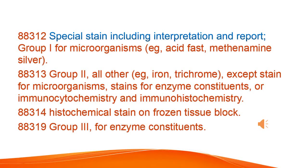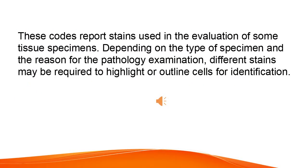Special stain, including interpretation and report: Group 1 for microorganisms, e.g., acid fast, methenamine silver. Group 2, all other, e.g., iron, trichrome, except stains for microorganisms, stains for enzyme constituents, or immunocytochemistry and immunohistochemistry. Histochemical stain on frozen tissue block, Group 3, for enzyme constituents. These codes report stains used in the evaluation of some tissue specimens. Depending on the type of specimen and the reason for the pathology examination, different stains may be required to highlight or outline cells for identification.